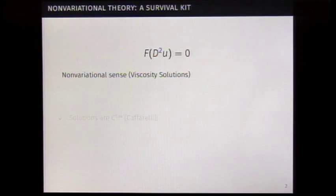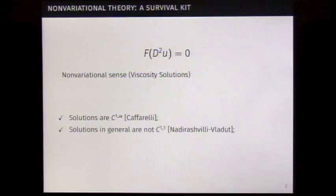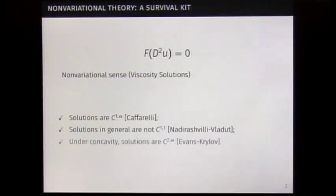We have some facts about that equation. The first one is solutions are C1 alpha Hölder. The second one is solutions in general are not C1,1. There's no hope to get C2 estimates for this class of operators. But if you add a concavity assumption, we can prove that estimate. Solutions can be C2 alpha, due to Evans-Krylov.